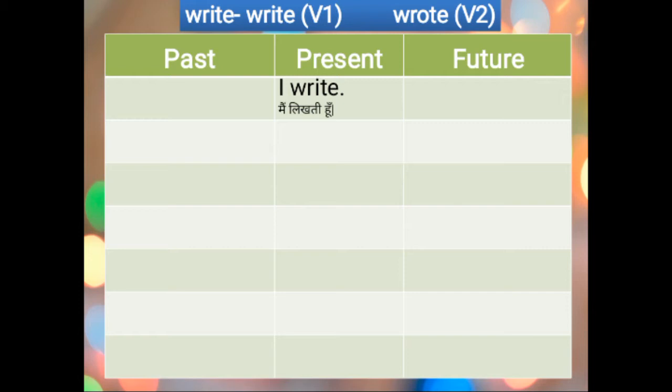Let's understand the present tense first. I WRITE — using only these two words, you can make your sentence. This simple sentence means MAIN LIKHTI HUN. For the future tense, all you have to do is add WILL. I WILL WRITE means MAIN LIKHUNGI.